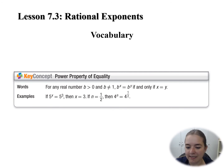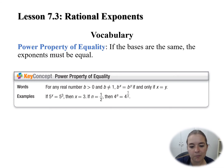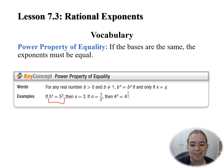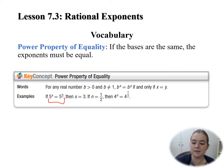The last term to write in today is the power property of equality. The power property of equality tells me that if the bases are the same, the exponents must be equal. So if I have 5 to the power of x equals 5 to the power of 3, then x must be 3. If my bases are the same, the exponents are equal.